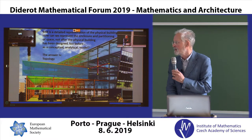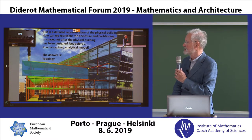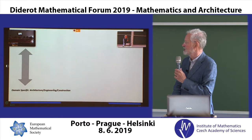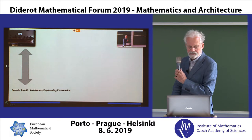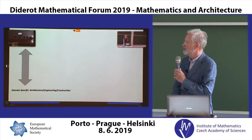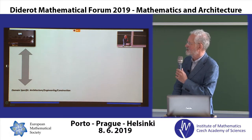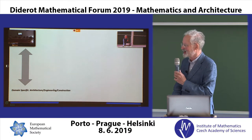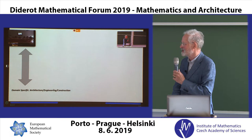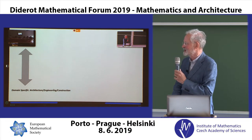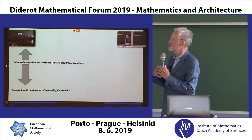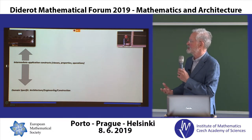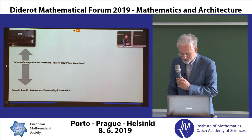Our suggestion is that the answer to this representation is topology. We're looking at topology from theoretical topology at one end, and at the bottom we've got the domain-specific architecture, engineering, and construction. We're actually somewhere in the middle, creating some intermediate application constructs — classes, properties, and operations.